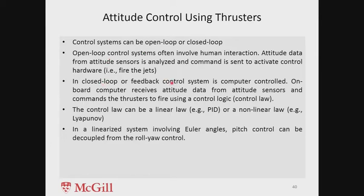In closed loop or feedback control systems you can have better control, because if there is an error you measure it and try to bring it close to zero. Mostly you use closed loop control, but for that you need an onboard computer to calculate, because you cannot always expect the ground station to give commands for a closed loop system. The onboard computer receives attitude data from sensors and commands the thrusters using some control law.